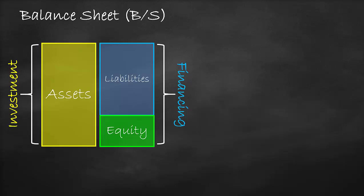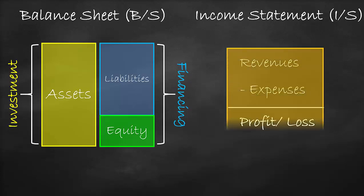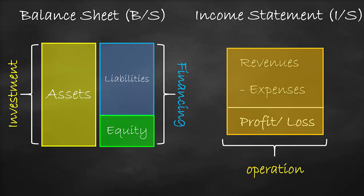Then, we have the income statement, which shows us revenues of the firm, and then we subtract the expenses in order to get a profit or a loss. The income statement is also known as the statement of operations, as it shows the operations of the firm in terms of revenue and expenses during the financial year.